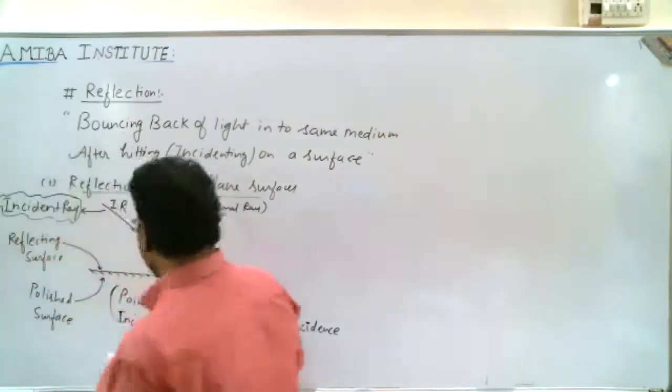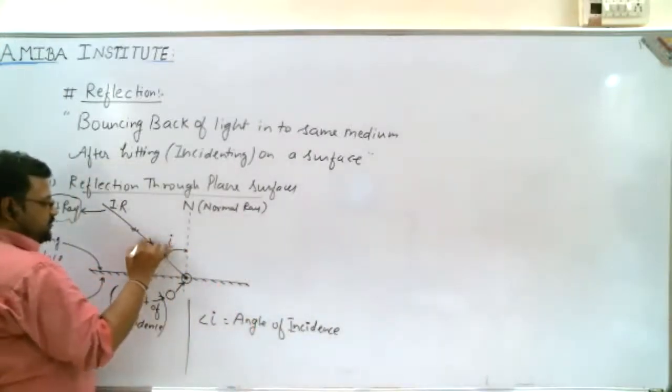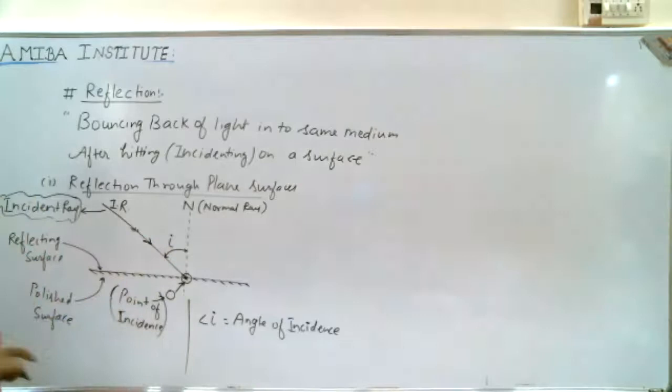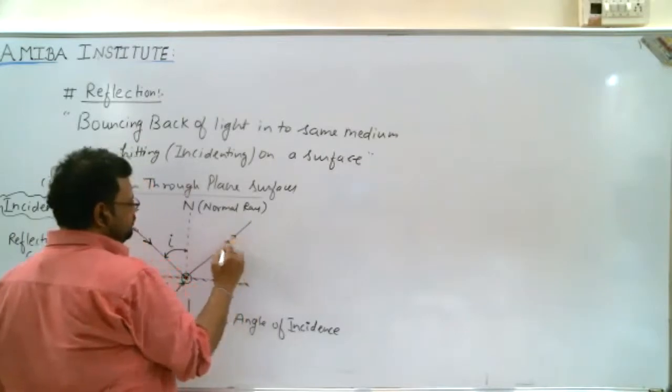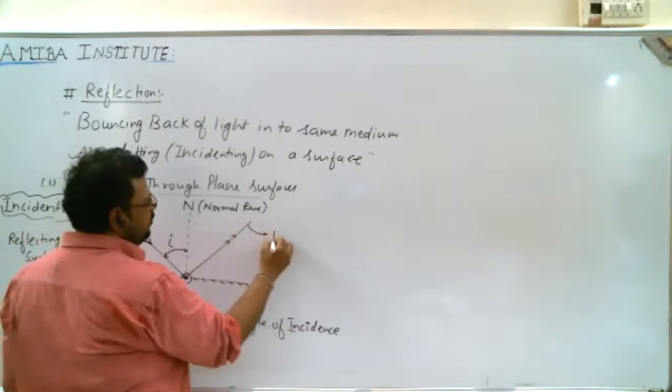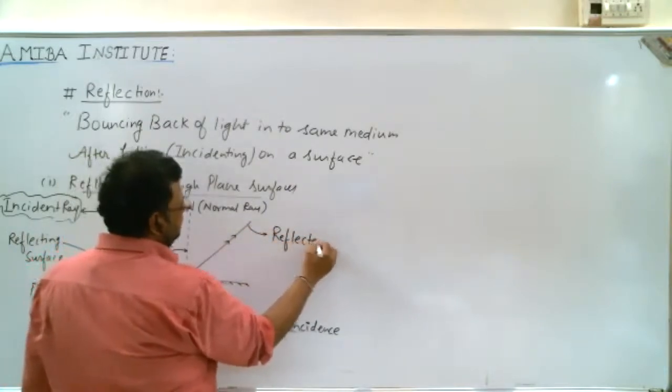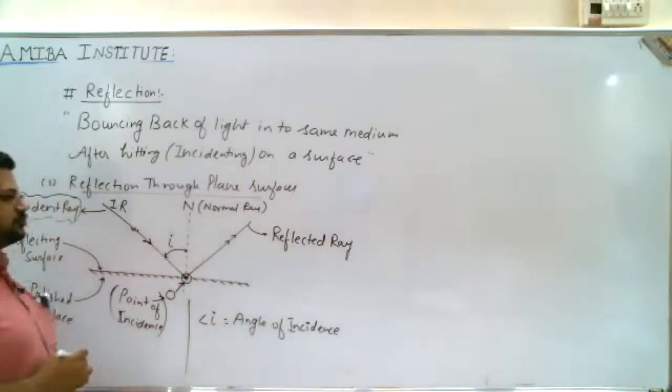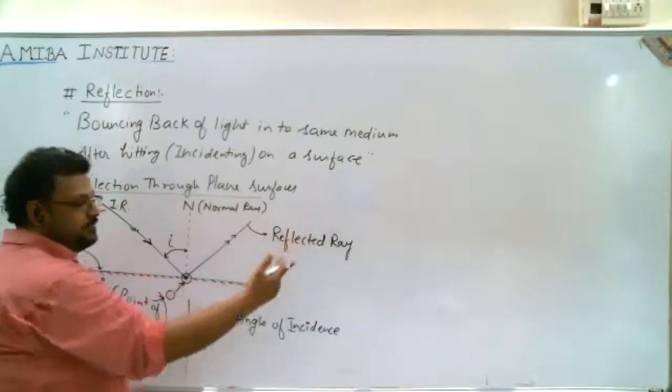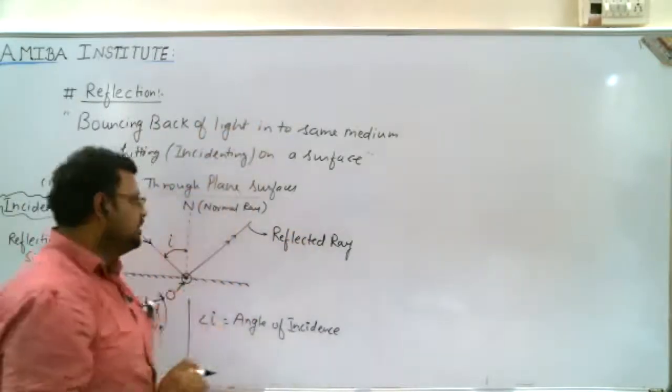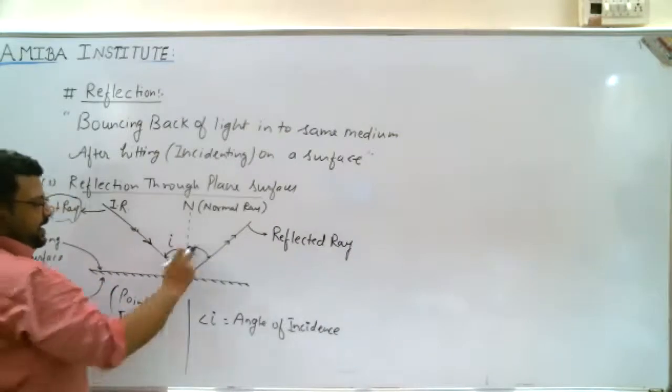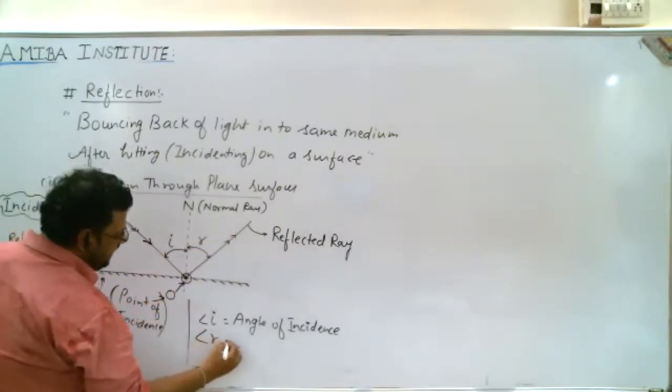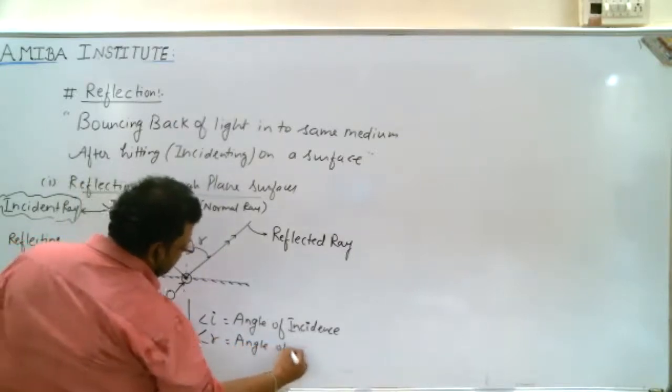The incident ray hits the surface and bounces back into the same medium. This is the reflected ray. The angle between normal and reflected ray is called angle of reflection.